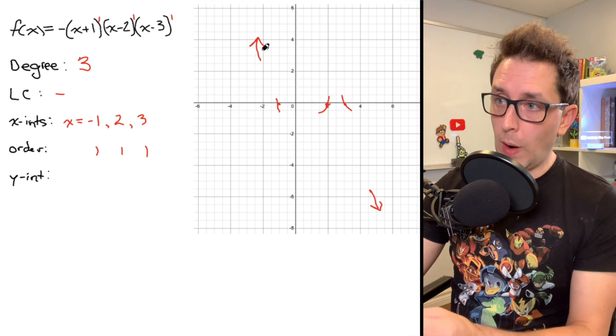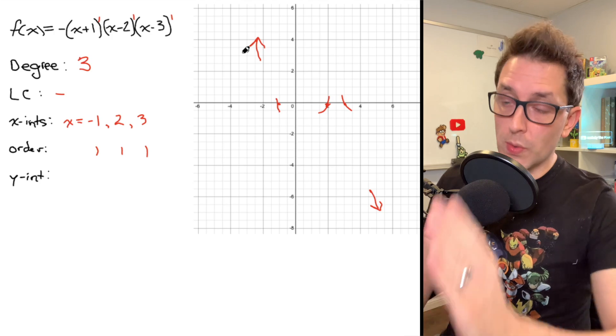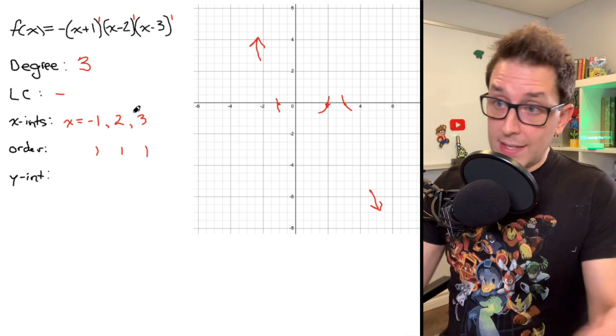So at each of our x-intercepts, our function is going to pass through the x-axis. I know at those points, my function is going to pass directly through the x-axis. So that's the order.